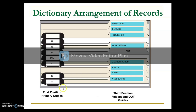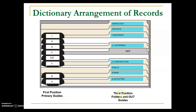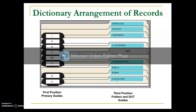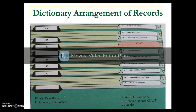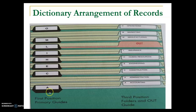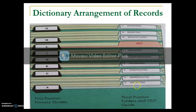So the dictionary arrangement begins with the alphabet for the primary guides, while the third-position folders use the full names for that particular alphabet. Here is another example of the dictionary arrangement: on the left side, the primary guides use the letter or alphabet, while the third-position folders use the full name for that particular alphabet.